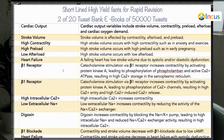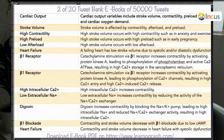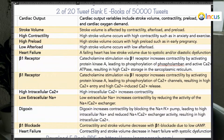Conditions with high stroke volume include anything that increases the inotropic state of the heart, such as anxiety or exercise. High preload also leads to high stroke volume — for example, in early pregnancy, increased plasma volume and increased venous return lead to high preload and high stroke volume. Anything that causes vasodilation decreases afterload and increases stroke volume.